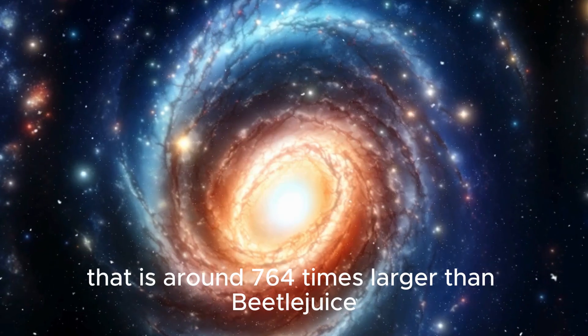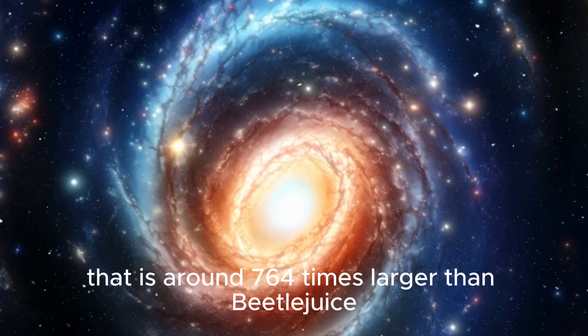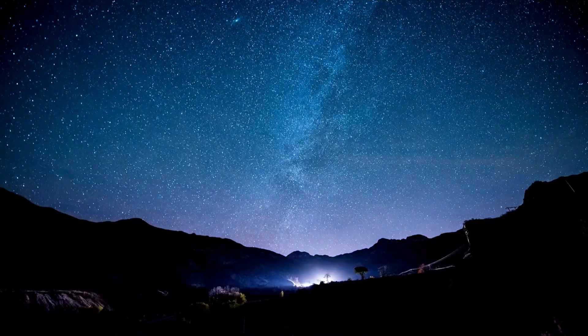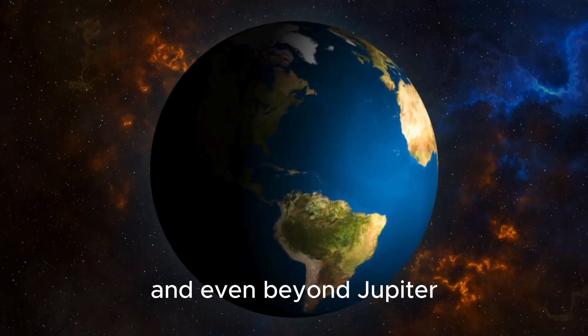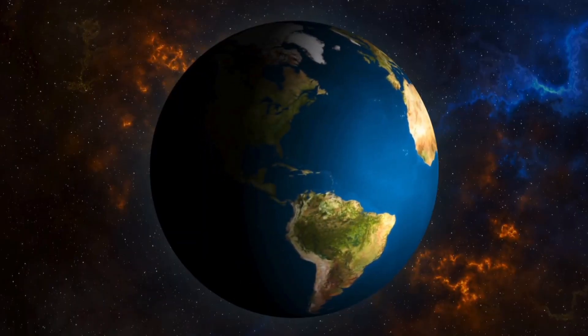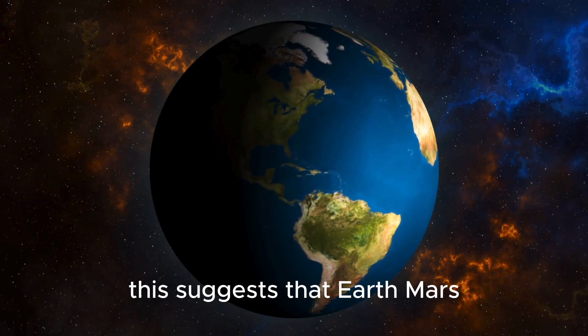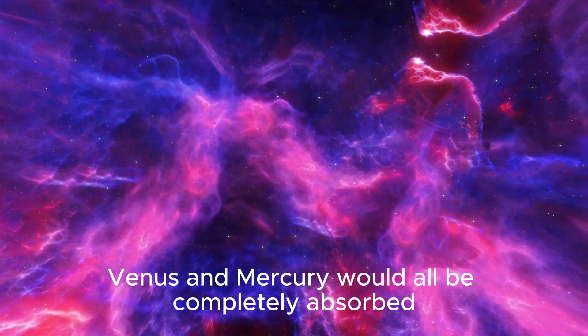The Sun has a radius that is around 764 times larger than Betelgeuse. If this star replaced our Sun in the solar system, it would reach past the asteroid belt and even be on Jupiter. This suggests that Earth, Mars, Venus, and Mercury would all be completely absorbed.